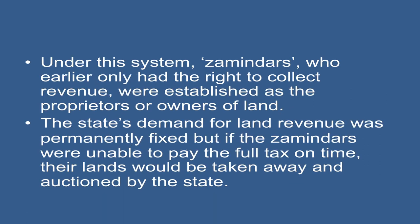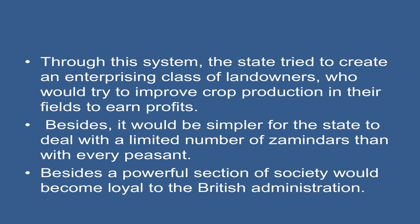To undo this disaster, Cornwallis introduced the system of Permanent Settlement in 1793. Under this system, zamindars, who earlier only had the right to collect revenue, were established as the proprietors or owners of land. The state's demand for land revenue was permanently fixed, but if the zamindars were unable to pay the full tax on time, the lands would be taken away and auctioned by the state. Through the system, the state tried to create an enterprising class of landowners who would try to improve crop production in their fields to earn profits.